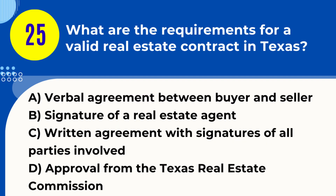Question 25. What are the requirements for a valid real estate contract in Texas? A. Verbal agreement between buyer and seller. B. Signature of a real estate agent. C. Written agreement with signatures of all parties involved. D. Approval from the Texas Real Estate Commission. Answer: C. Written agreement with signatures of all parties involved. Explanation: For a real estate contract to be valid in Texas, it must be in writing and include the signatures of all parties involved in the transaction.